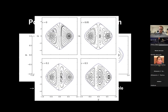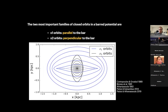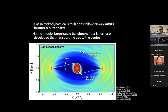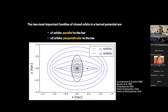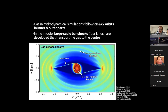As you increase the bar strength, the island corresponding to the elongated orbit grows in phase space. The two most important families of closed orbits in a barred potential are called x1 orbits — parallel to the major axis of the bar — and x2 orbits — perpendicular to the major axis. In a simple hydrodynamical simulation in this same potential, gas follows x1 orbits in the outer parts and x2 orbits in the inner parts.